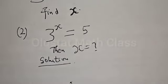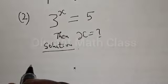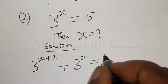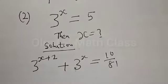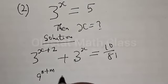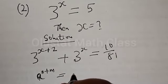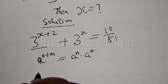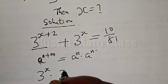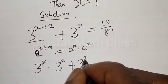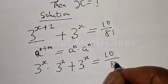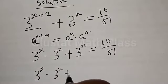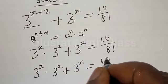From the first question we have: 3 raised to power x+2 plus 3 raised to power x equals 10 divided by 81. We know that a raised to power n+m is the same as a raised to power n multiplied by a raised to power m. Therefore, 3 raised to power x+2 can be transformed as 3 raised to power x multiplied by 3 squared, plus 3 raised to power x, equals 10 divided by 81.